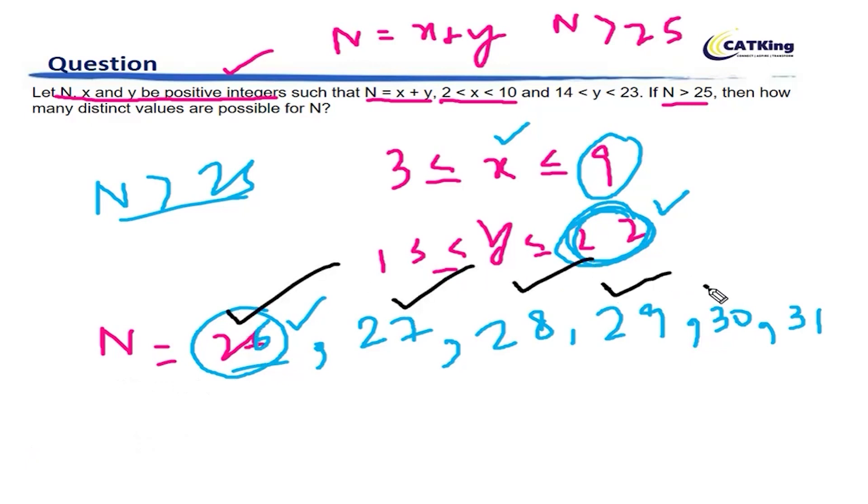26, 27, 28, 29, 30, and 31. So how many distinct values are possible?